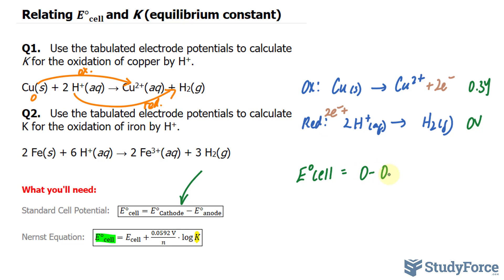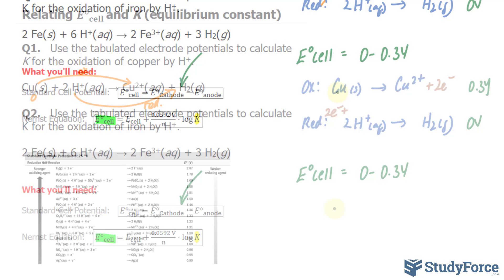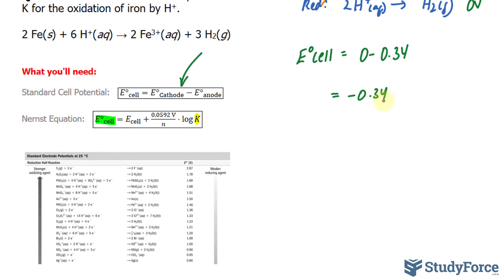so 0 minus 0.34, this gives us negative 0.34, and I'll substitute that into the Nernst equation.